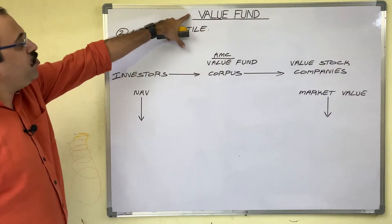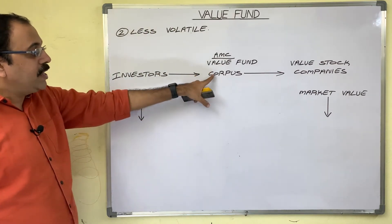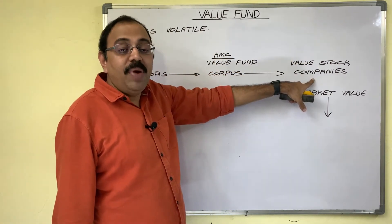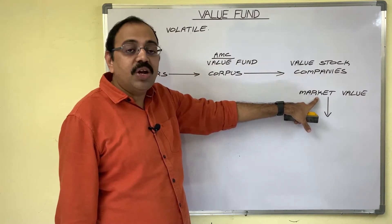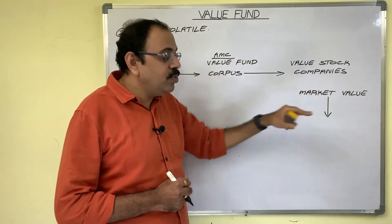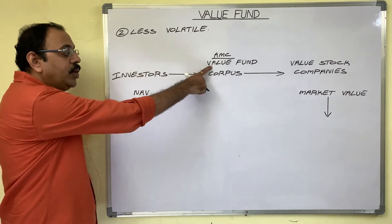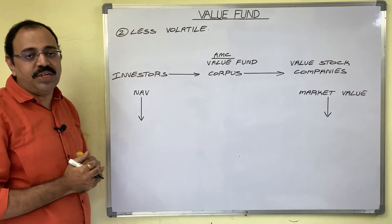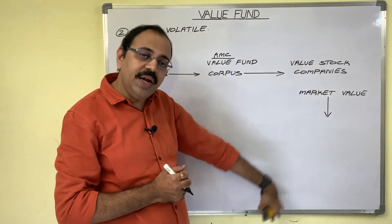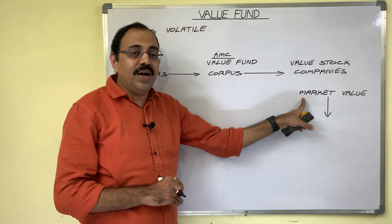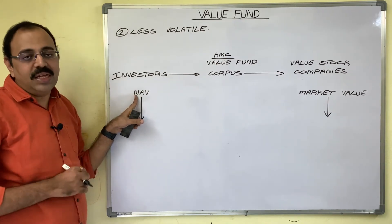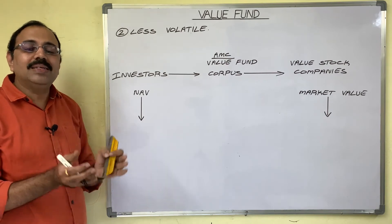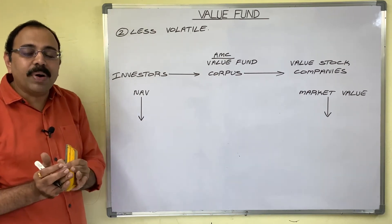Second, value funds are less volatile. Since the maximum portion of the corpus is invested in value stocks — companies whose market value is already undervalued — investors get fund units at lesser NAVs. In bear market situations, as the market value of one share has already decreased, it doesn't decrease much further. As a result, the NAV also doesn't decrease much, making these funds less volatile with moderate risk. It is recommended to invest 20 to 25 percent of your portfolio in value funds.